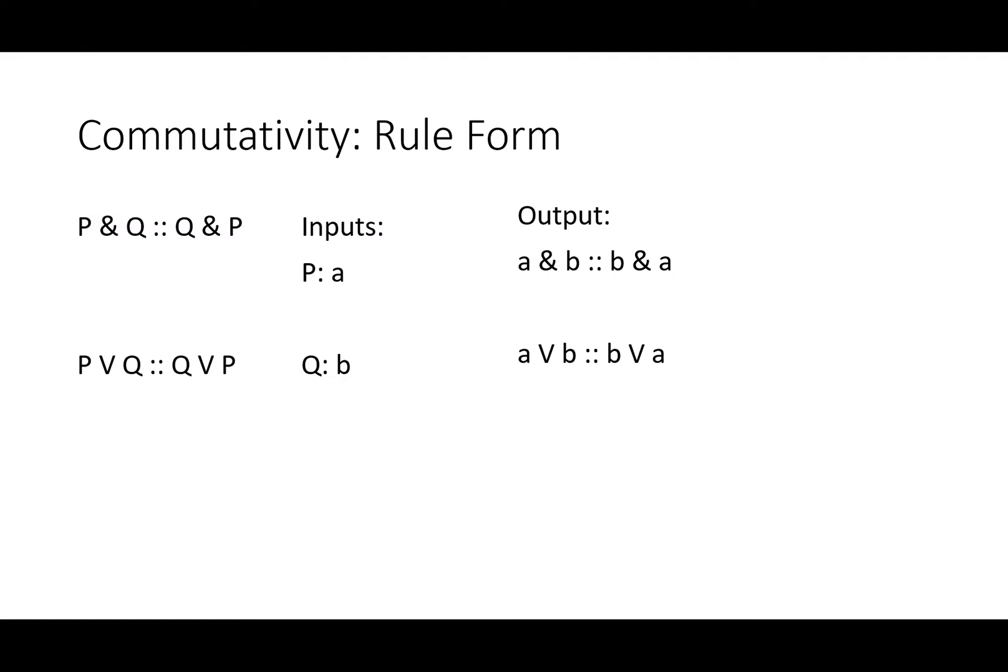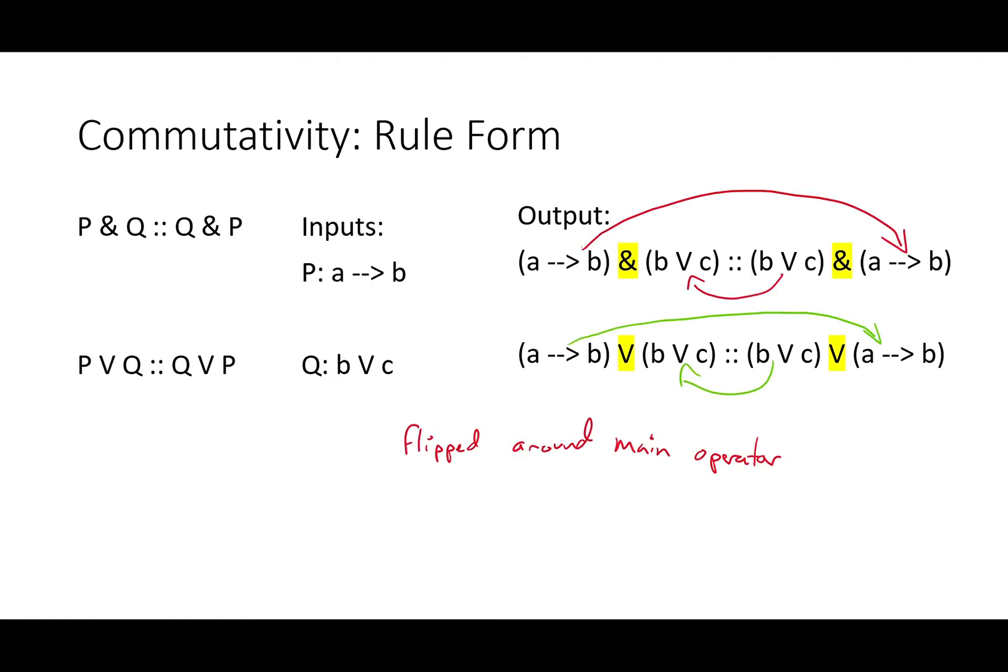Simple inputs A and B give us A and B is the same as B and A, and A or B is the same as B or A. More complicated inputs can still be used. Let's put in if A then B for P, and either B or C for Q. We get if A then B and either B or C is the same as either B or C and if A then B.